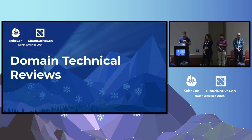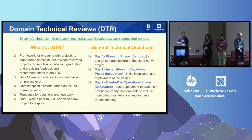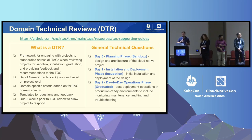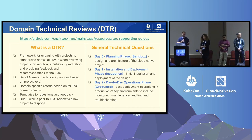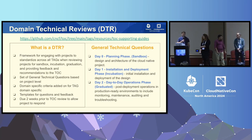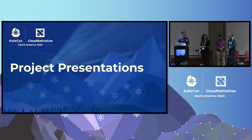We wanted to quickly overview what is a DTR — a domain technical review. This is really a framework for engaging with projects, providing guidance for presentations on what they would want to come to a TAG or the community, as well as helping them understand the different levels from sandbox to incubation and graduation, and how they work through that. There'll be specific questions and guidelines for each step of the process, and we've formalized the ability for the TAG to review projects and give them a forum for their input. This is a fairly new formalized process that we have done since KubeCon Paris until today.